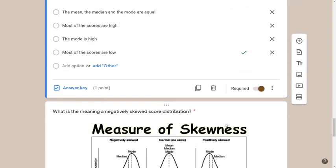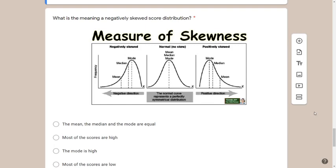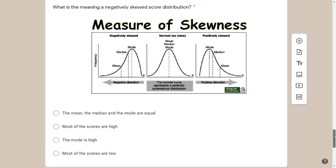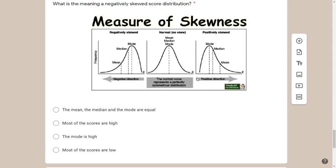For a negatively skewed score distribution, imagine piercing the left side — the low-scoring students are removed. What remains are the students who answer well, so most scores are high. Therefore, the answer is B — most of the scores are high. If you need more review materials, you can join my class for free by going to classroom.google.com and entering the class code.